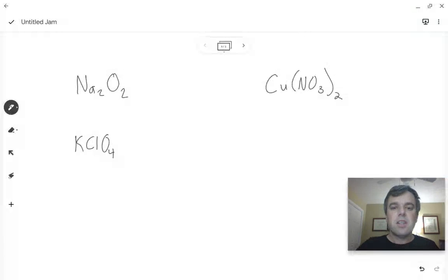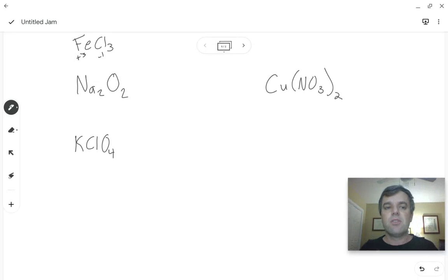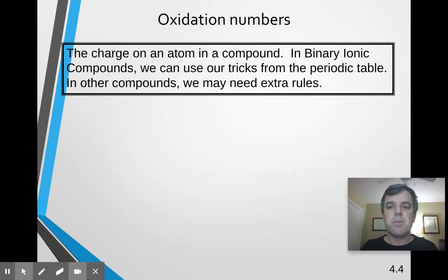For instance, if I give you a very simple case of something like FeCl3, well, we know that chlorine is a minus 1. And we have three of them. So iron is a plus 3 because the total charge is 0. So that's a real simple one there.